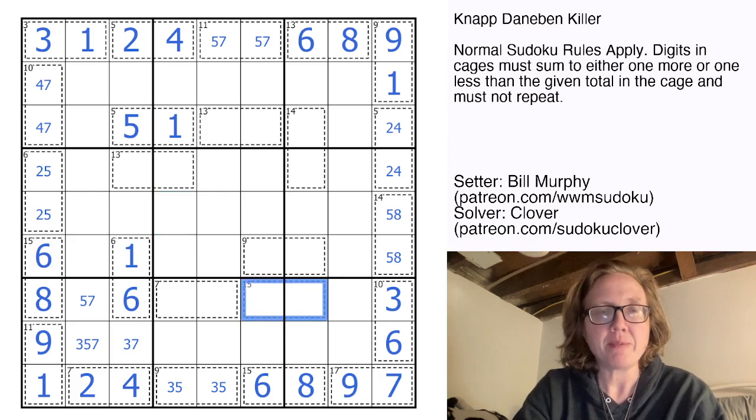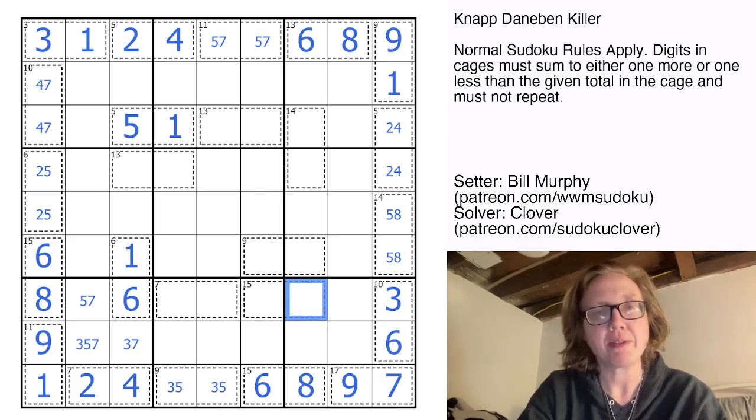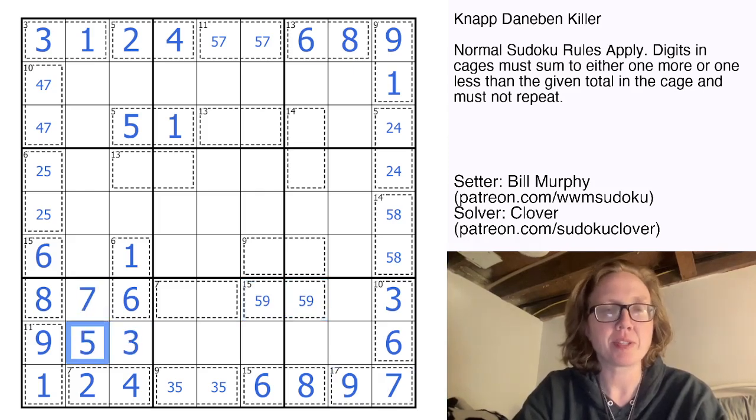Over here, 15, we can't go up by one to 16 because that would be seven plus nine, and we've already used both of those digits in this region. So we have to be going down by one to 14, which in this case will be five plus nine. That's going to resolve some stuff for us. The five goes there, the nine goes there.